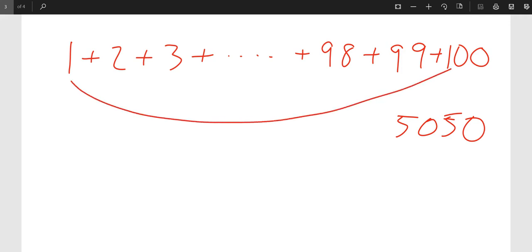1 plus 100. What is 1 plus 100? 101. 2 plus 99. 3 plus 98. So this little kid saw that there were pairs that could be added together, and they were constantly coming up with the same thing.